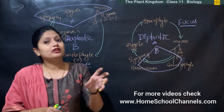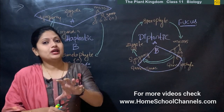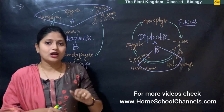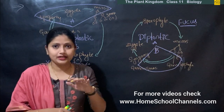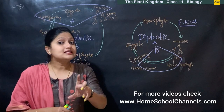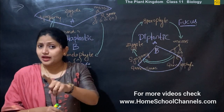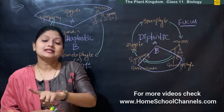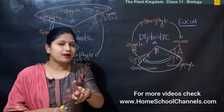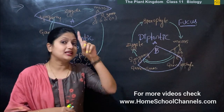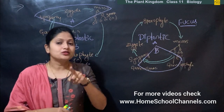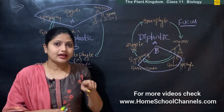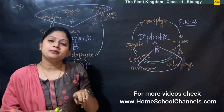When haploid cells divide, they usually undergo mitosis and they form a plant body which is called the gametophyte. The haploid cells form the gametophyte, which can be called the main plant body in some plant species, as we have seen in algae. So that haploid plant body was the main plant body — the gametophyte was dominant there.